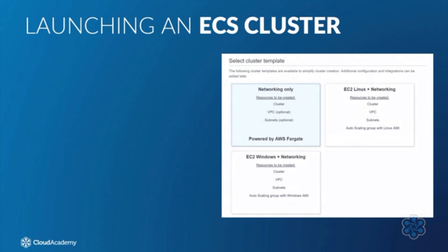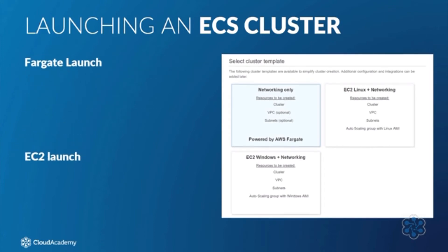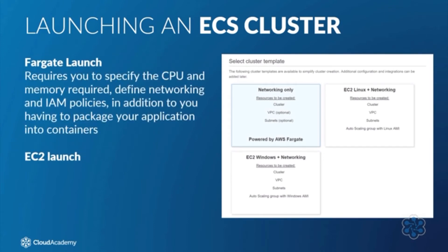When launching your ECS cluster, you have the option of two different deployment models: a Fargate launch and an EC2 launch. The Fargate launch requires far less configuration and simply requires you to specify the CPU and memory required, define the networking and IAM policies, in addition to having to package your applications in containers.